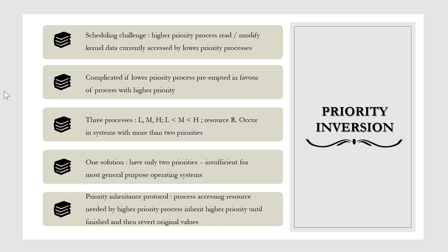As an example, assume we have three processes L, M, and H whose priorities follow the order L < M < H. Assume that process H requires resource R, which is currently being accessed by process L. Ordinarily, process H would wait for L to finish using resource R. However, suppose that process M becomes runnable, thereby preempting process L. Indirectly, a process with lower priority — process M — has affected how long process H must wait for L to relinquish resource R. This problem is known as priority inversion.